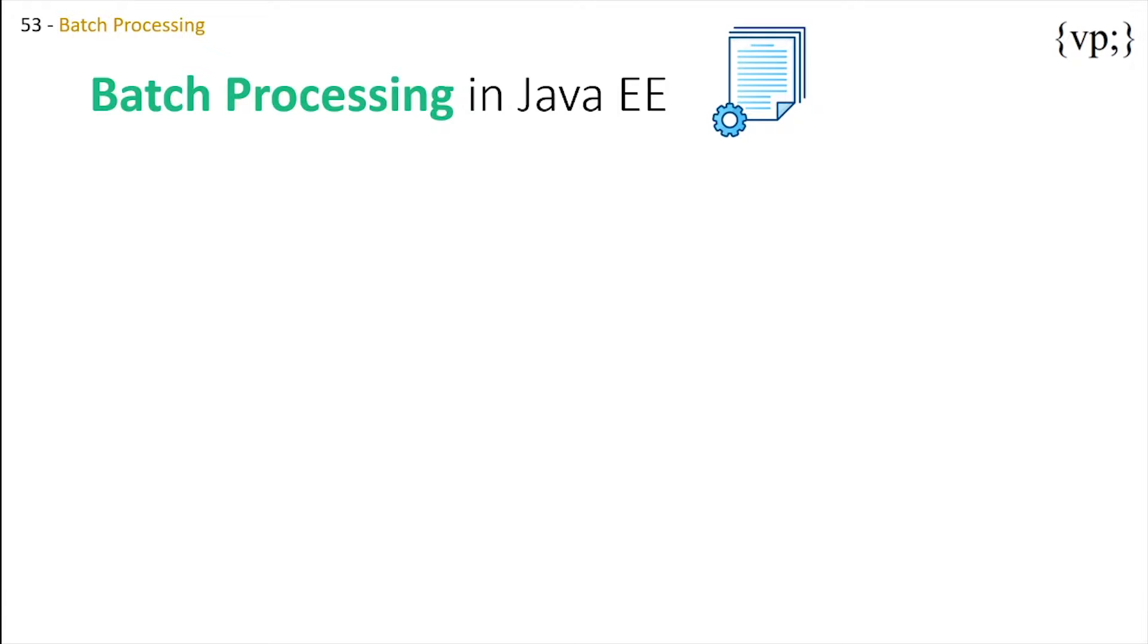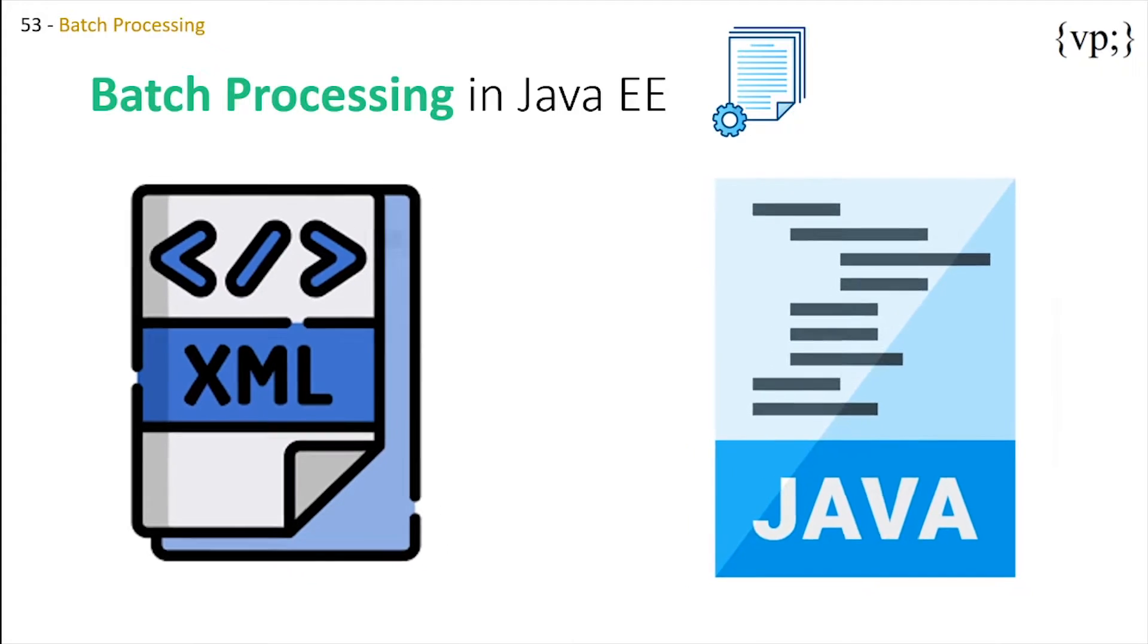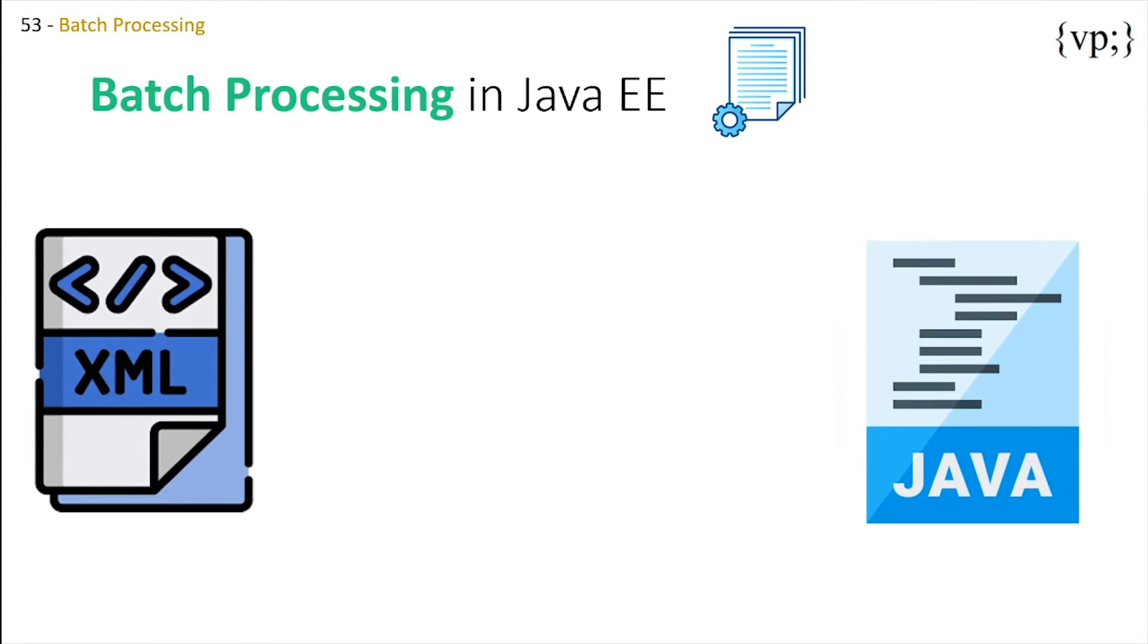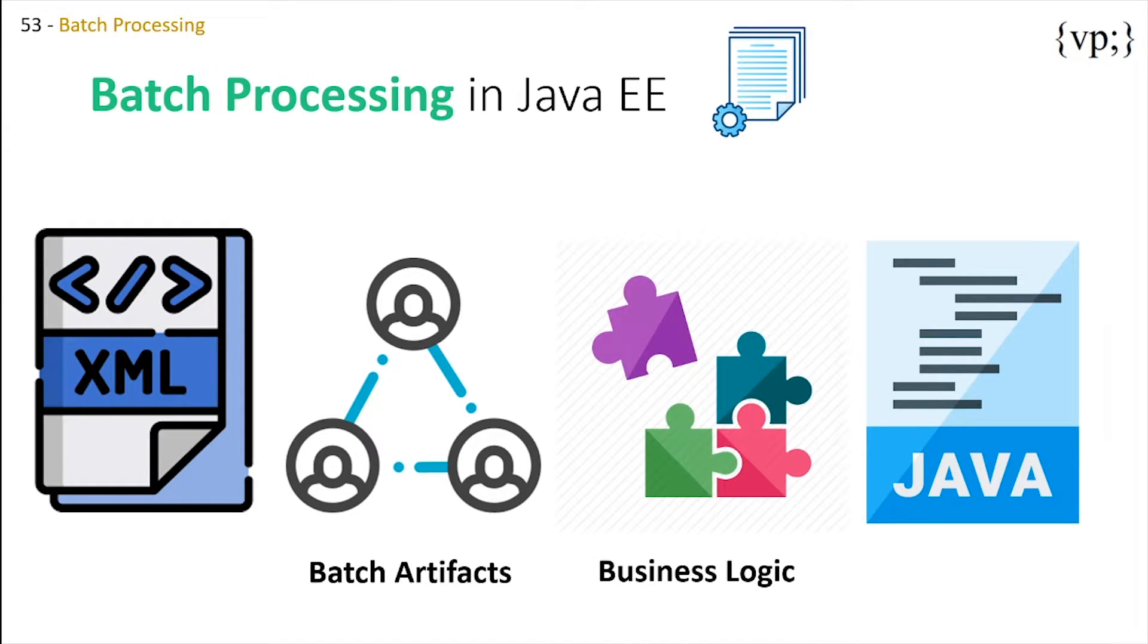So now let's go through the steps on how to create a batch application. Batch applications in Java EE contain XML files and Java classes. The XML files contain information on the relationships of the batch artifacts. These are part of a chunk-oriented step, a task-oriented step, a decision element, or another component of a batch application, while the Java classes contain the business logic of the application.